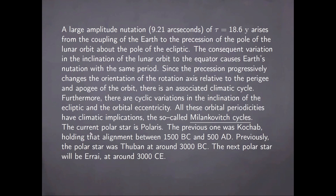As another interesting fact, the current polar star is Polaris. The previous one was Kochab, and it held that alignment roughly between the year 1500 BC and up to around 500 AD — fairly close to the formal dissolution of the Roman Empire. Previously, the polar star was Thuban at around 3000 BC, around the height of the ancient Egyptian civilization. The next polar star will be Vega once again, at around the year 3000 of the current era.